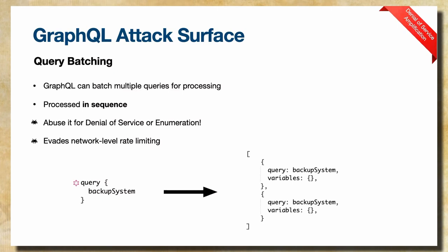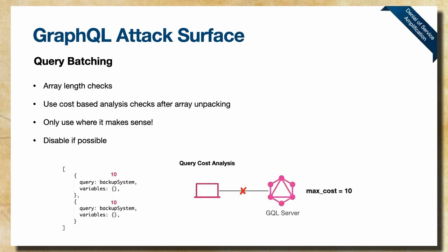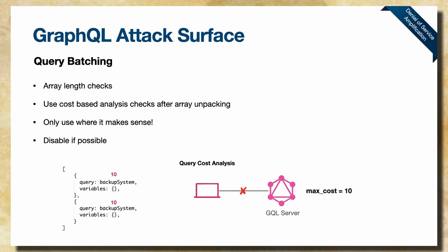From a blue teaming standpoint, if batching is in your application, you could write a middleware analyzer to check the array length — if you get an array with 100 elements, maybe drop it. Alternatively, use cost-based analysis: assign a value to a field or operation, say a value of 10. If you call backup system twice, that's a cost of 20; if the max cost on the backend is 10, you drop the request. Overall, batching is a feature you can disable — only use it where it makes sense and be aware of the trouble it can bring.